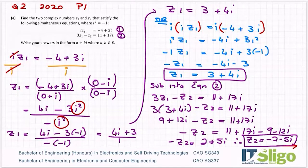And that's it solved for Z1 and Z2. So I hope that was okay. A bit unusual simultaneous equation with complex numbers, but there you go.